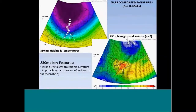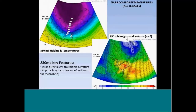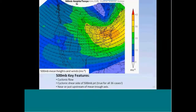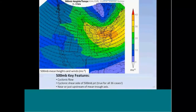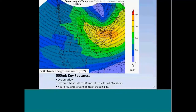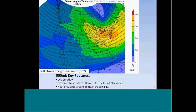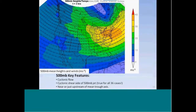Here's 500 millibars now. Some of the key features: cyclonic flow at this level. We're on the cyclonic shear side of a 500-millibar jet, and it's interesting to note that that was true for all 36 cases — we were on the cyclonic shear side of the upper-level jet. What we're looking at in the animation is a six-hourly loop extending from three hours before the squall to three hours after. Cyclonic flow aloft on the cyclonic shear side of the upper-level jet in all cases, and near or just upstream of the mean trough axis.